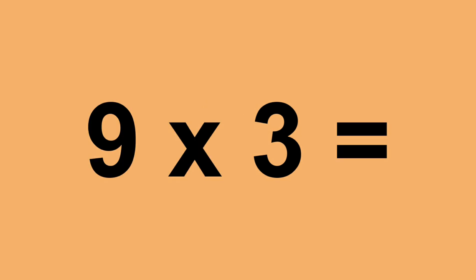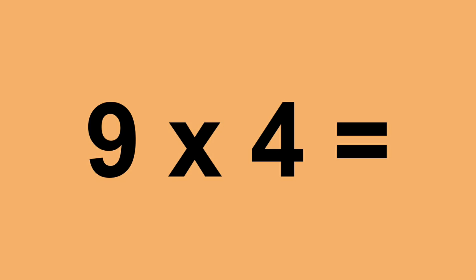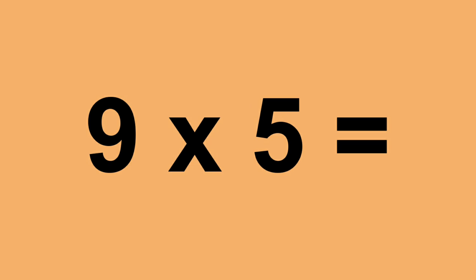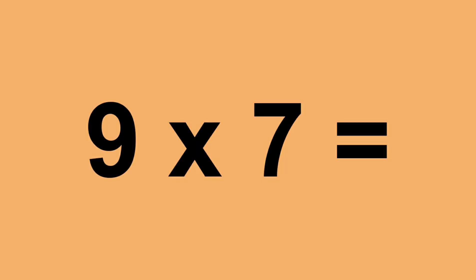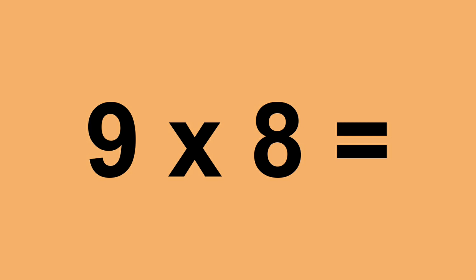Nine times ten equals ninety-six. Nine times four equals thirty-six. Nine times five equals forty-five. Nine times six equals fifty-four. Nine times seven equals sixty-three. Nine times eight equals seventy-two.